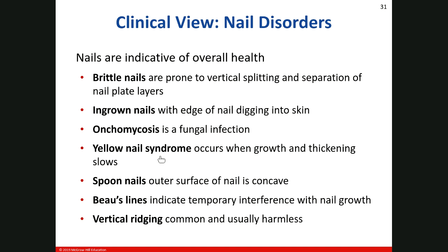Yellow nail syndrome: you'll see this in the older population — it's just the slowing of nail growth. Normally our nails are convex — looking at them from the side, they have a slight curve. When you get spoon nails, the nail is concave. Beau's lines are a temporary interference with nail growth, usually resulting from trauma — something causes an issue and slows the nail growth, and you'll see a white line there. Vertical ridging — some of you might have vertical ridging, and in most cases it's just how your nail grows, something harmless and pretty common.